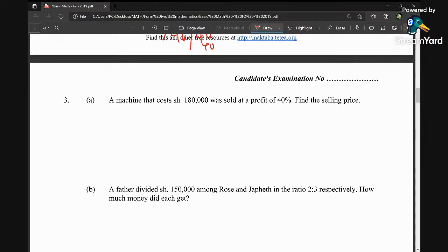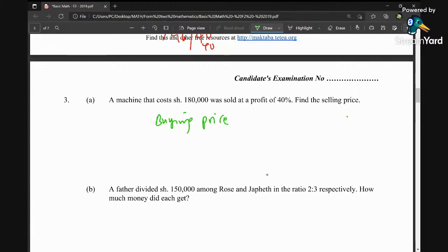Question number three: A machine that costs 180,000 shillings was sold at a profit of 40 percent. Find the selling price. There are many ways which can be used to solve this question, but one of them is: we know that the buying price is equivalent to 100 percent. So I can say that 100 percent is equivalent to 180,000 shillings.